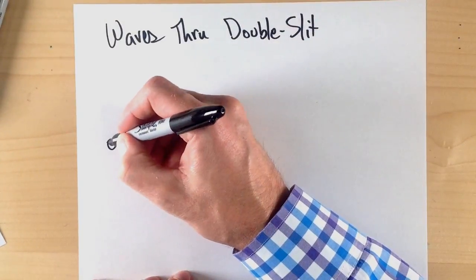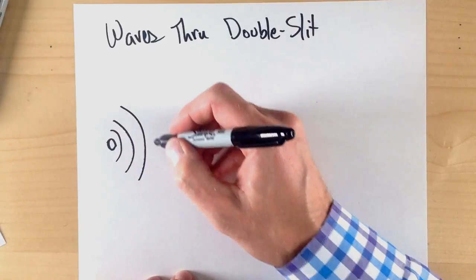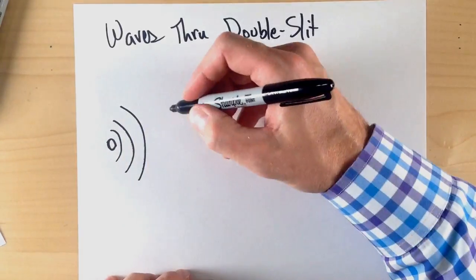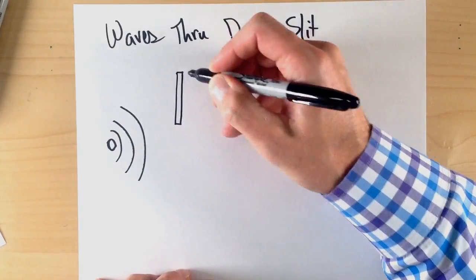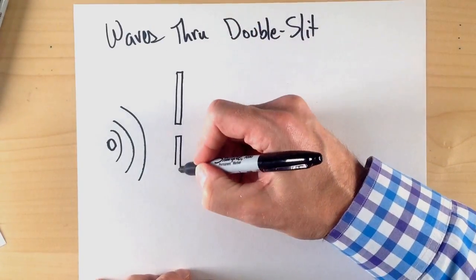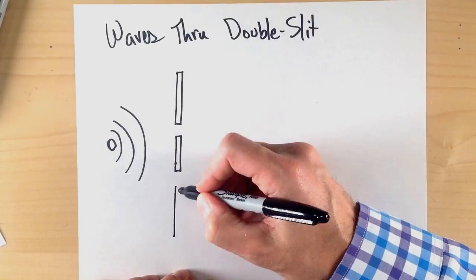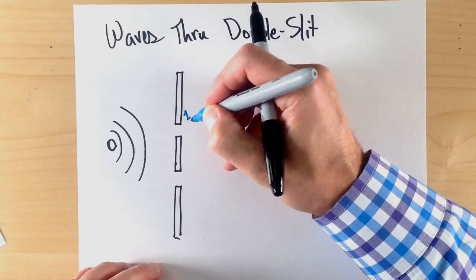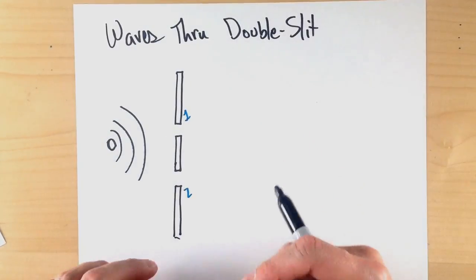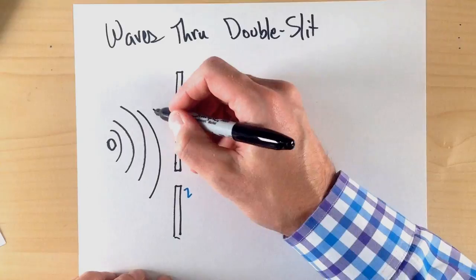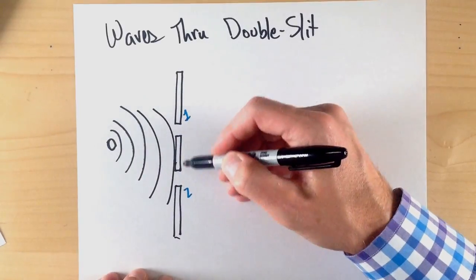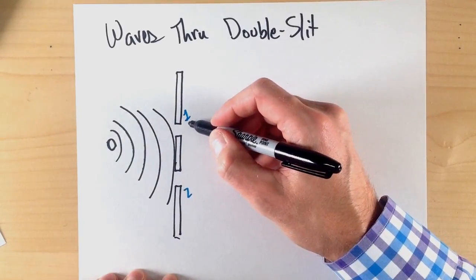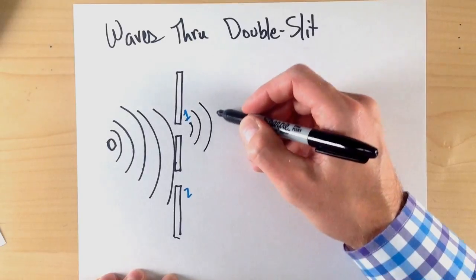In that case, let's suppose that we have some wave generator, some way to generate waves. And then we have a similar arrangement of a slit. And so again, this is slit one. This is slit two.